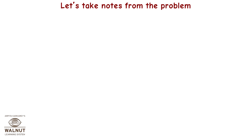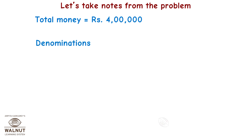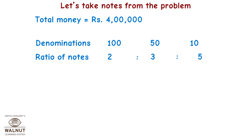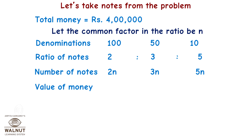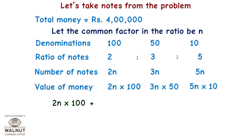Let's take notes from the problem. Total money is Rs 4 lakh. Denominations are Rs 100, Rs 50, and Rs 10. Ratio of notes is 2:3:5. Let the common factor be n. Therefore number of notes are 2n, 3n, and 5n. Value of money is 2n into 100, 3n into 50, and 5n into 10. Now, 2n×100 plus 3n×50 plus 5n×10 equals 4 lakh.